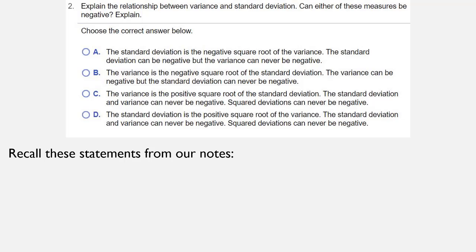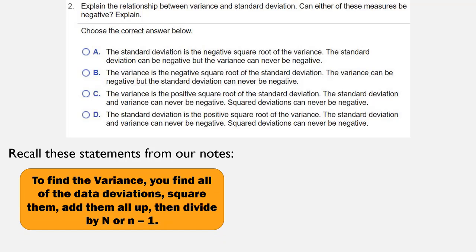So, let's recall these statements from our notes. To find the variance, you find all of the data deviations, square them, add them all up, then divide by n or n minus 1. And what we realize from that is that a sum of squares is never negative.